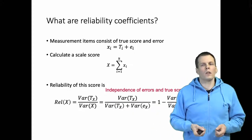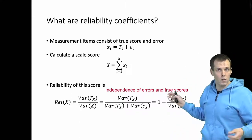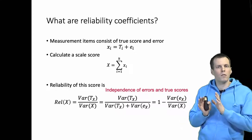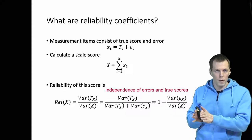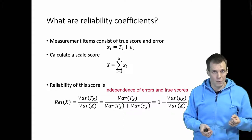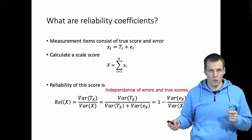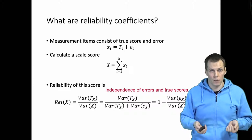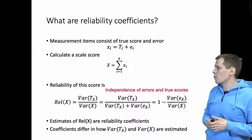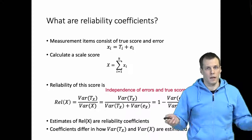One important assumption that all reliability coefficients make is that error scores are random noise — the error variation is random and independent of the true scores. Different coefficients make different assumptions about true scores. The tau equivalence assumption made by coefficient alpha means that the true score is the same for each item. Other coefficients relax this assumption in different ways, producing different kinds of reliability estimates. Coefficients differ in how the variation of true score and scale score are calculated.